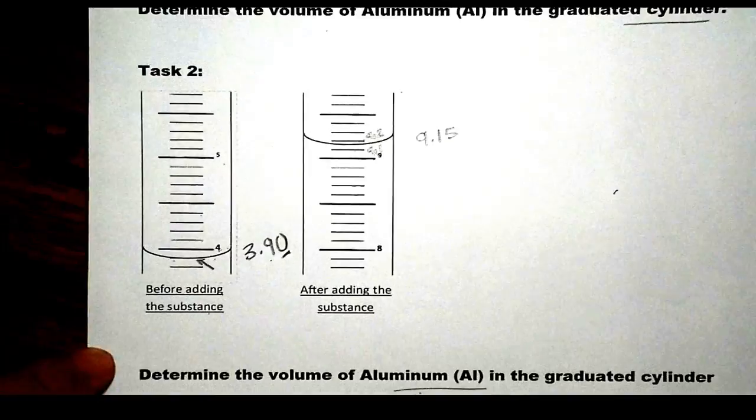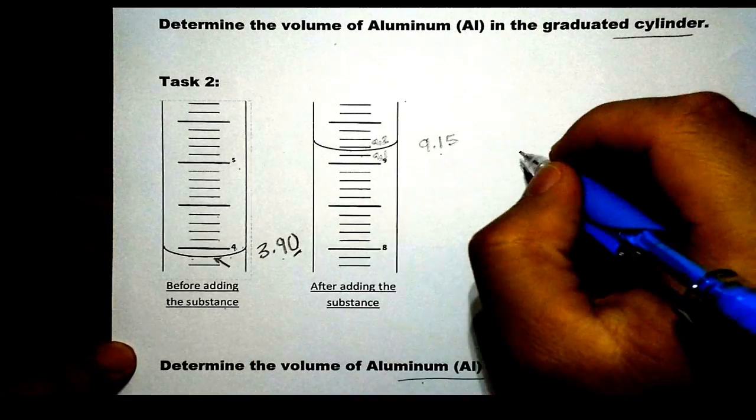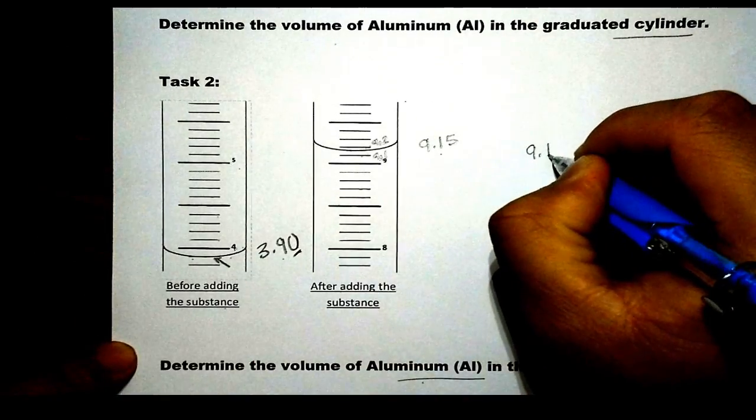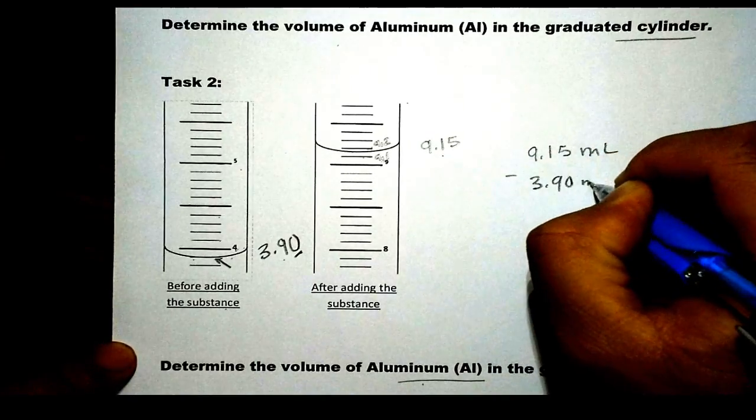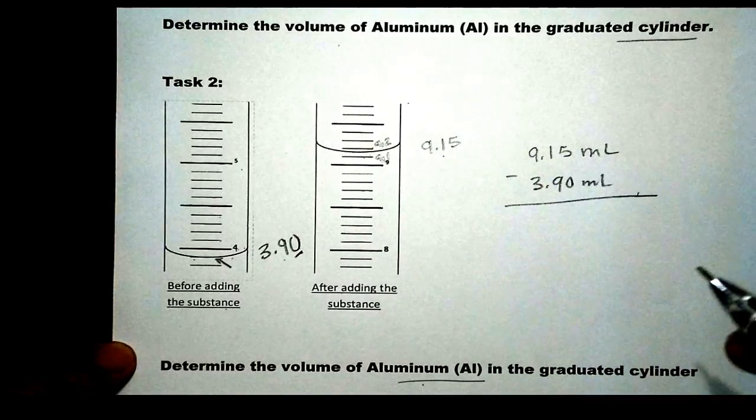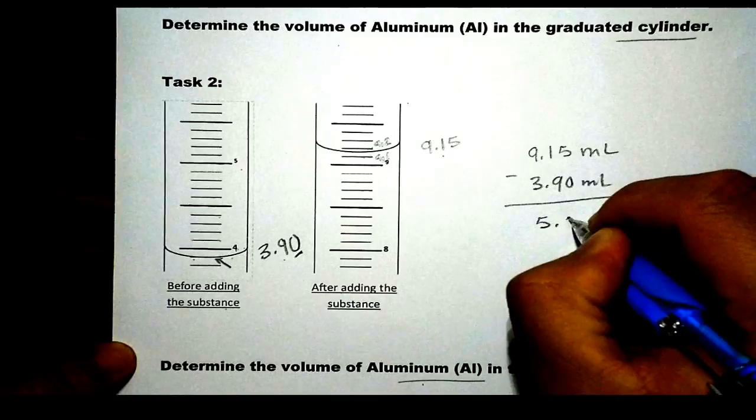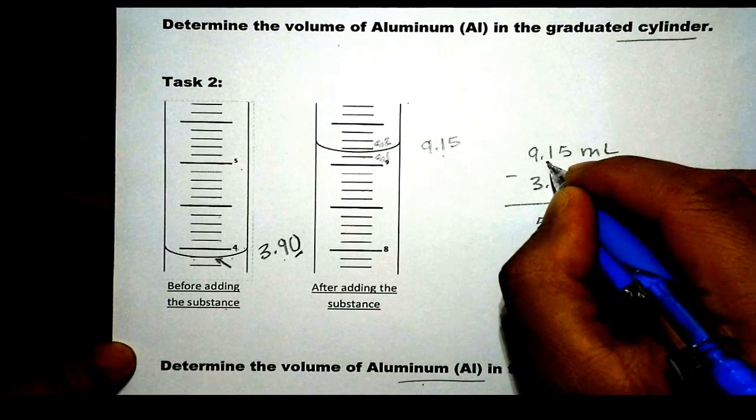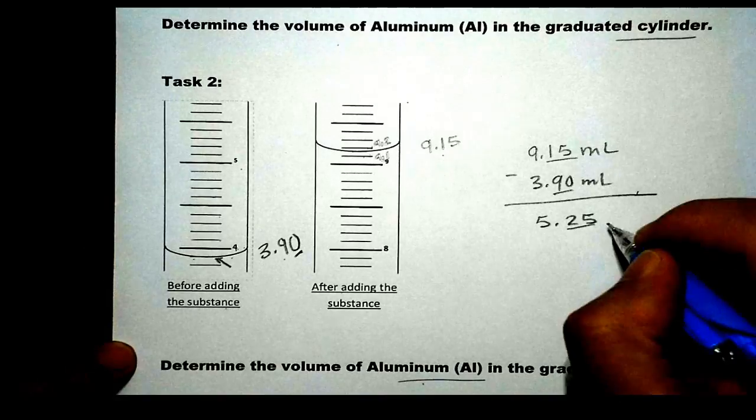And again, let's go back and look at our difference. Basically, you take the final minus initial, which is 9.15 mL minus 3.90 mL. And that will give us the volume of aluminum, 5.25. Notice how this is two decimal places, and this is two decimal places. Therefore, this must also have two decimal places as well.